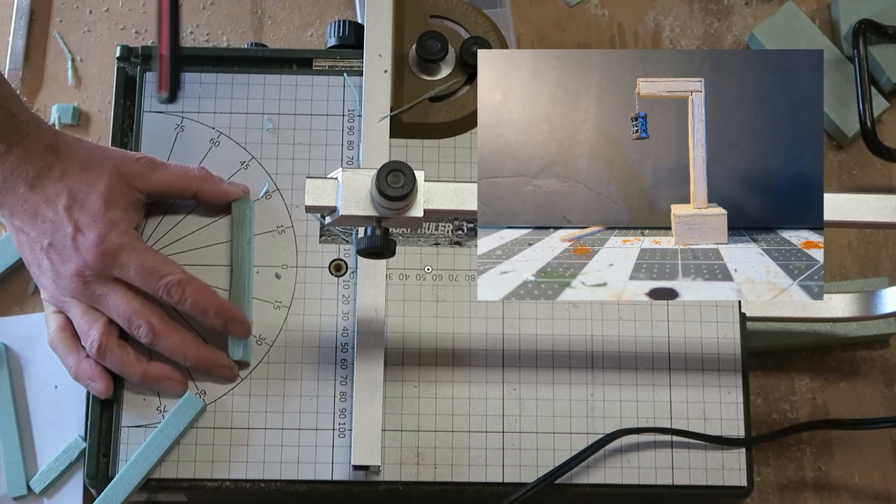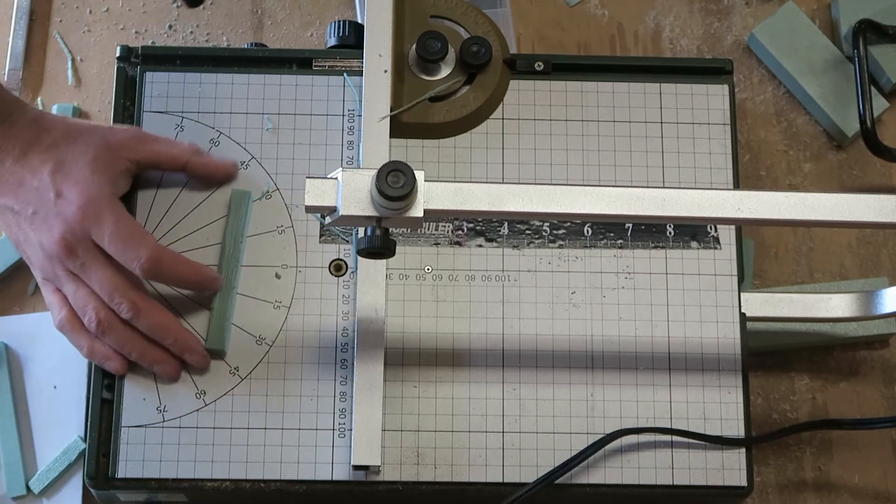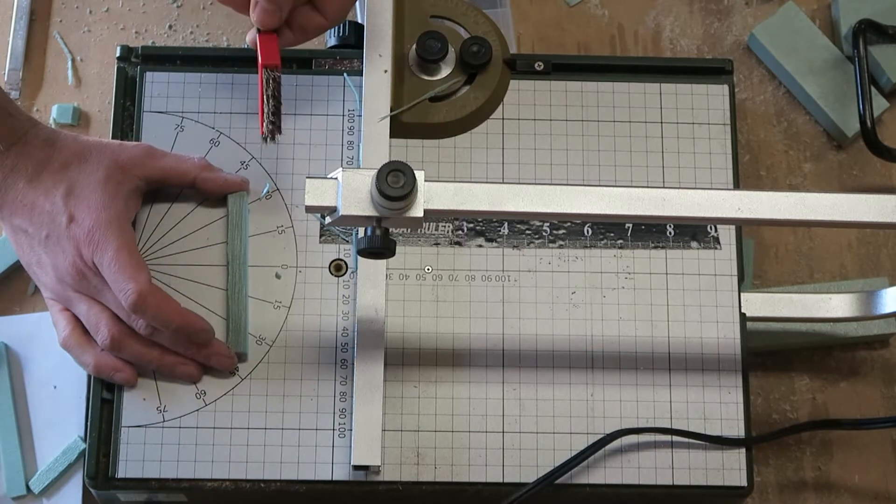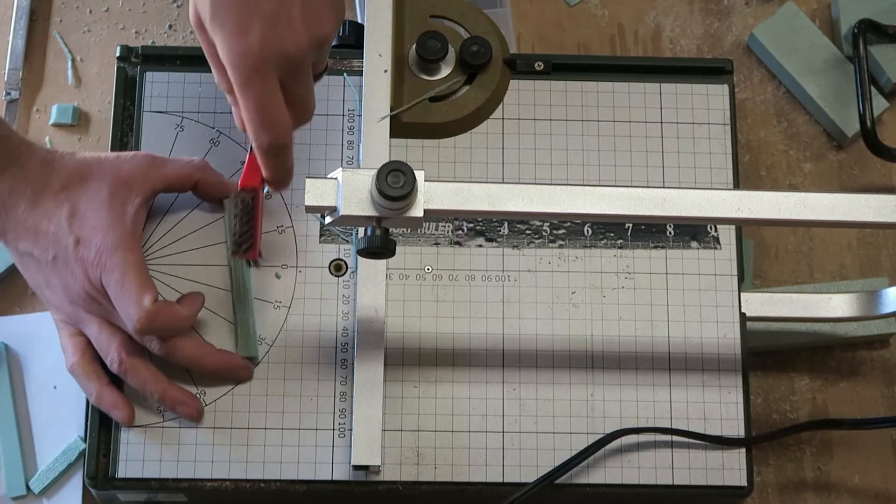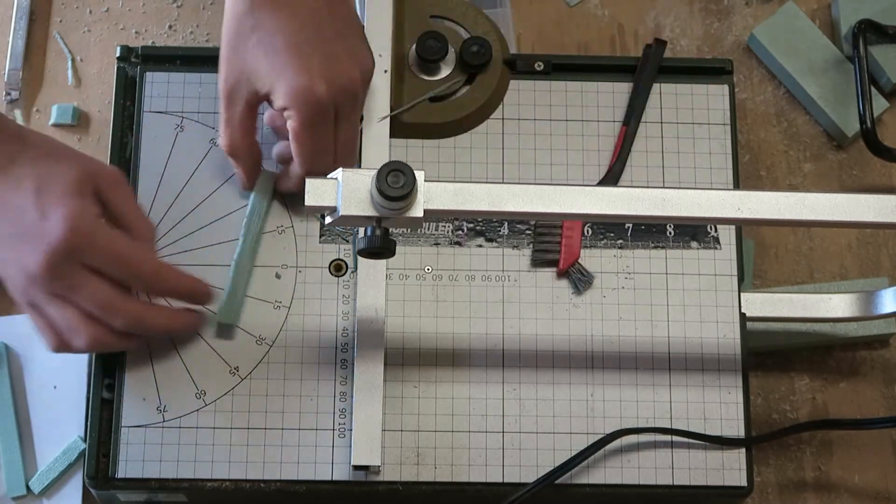Jeremy from Black Magic Craft made his lantern post using foam insulation, the same thing. He used the purple pink stuff compared to the bluish green that I have here.